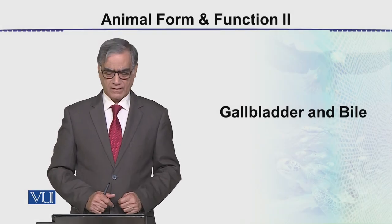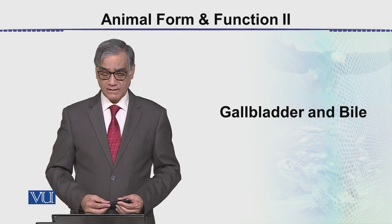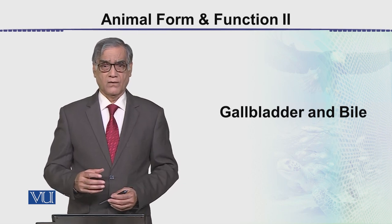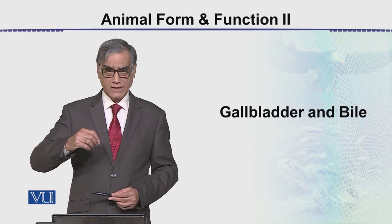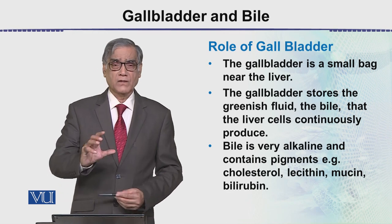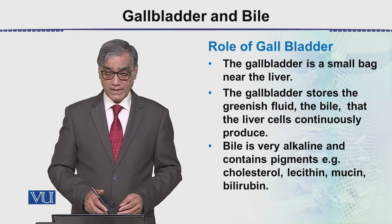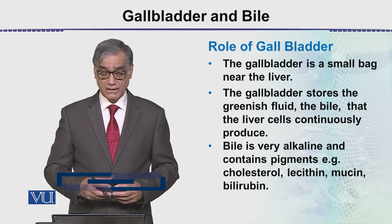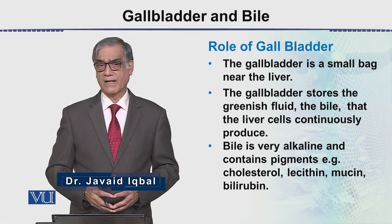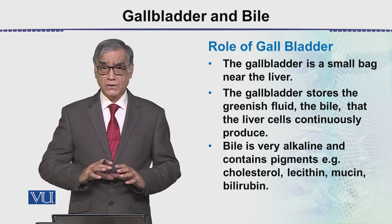In this module, as a separate topic, we are going to discuss the Gallbladder and Bile. Bile is the secretion of the liver, and it comes into the Gallbladder, which is associated and very close to the liver. The Gallbladder is a small bag near the liver, and it stores the greenish fluid which is Bile, produced by the liver in a continuous manner.